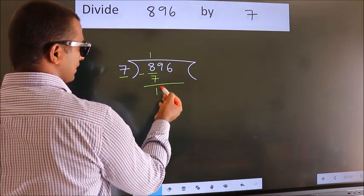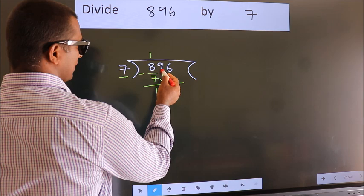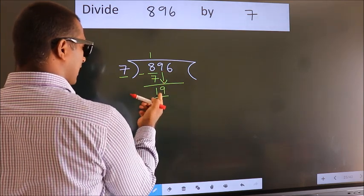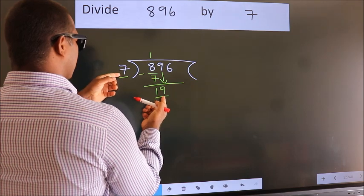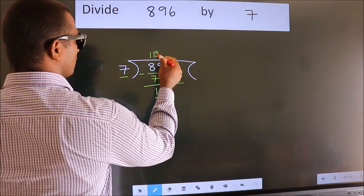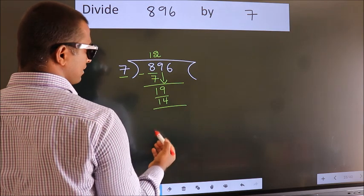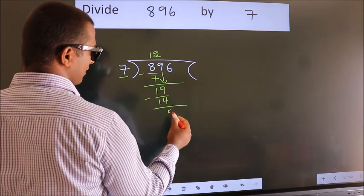After this, bring down the next number. So 9 down, making 19. A number close to 19 in the 7 table is 7 times 2 equals 14. Now we subtract and get 5.